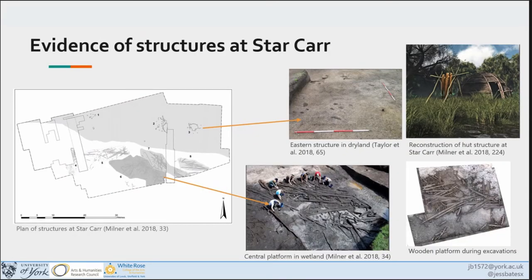In terms of the evidence of structures, which is the main part of my research, there's evidence of at least three structures at Star Carr — and this is excluding the wetland areas. There was a beautiful array of wetland platforms discovered within the lake fringe, but this is not part of my research, so whenever I talk about structures in this presentation I will be talking about just the dry land areas. These three structures have a very different character; each has its own sort of signature, which I'll hopefully be able to explain further as I go through.